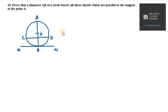Hello everyone, let's start with question number 10. It says, prove that a diameter AB of a circle bisects all those chords which are parallel to the tangent at the point A.